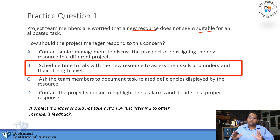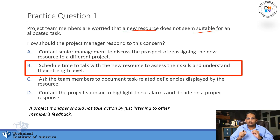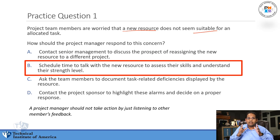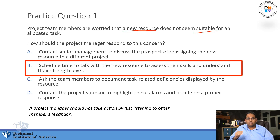Let's go through why the rest of them are wrong and why B is correct. For choice A, contacting senior management to discuss reassigning — there are two things wrong here. First, you should never take actions unless you have assessed the situation and found the root cause of your problem. That is a key mindset for this exam. Always, in any problem, assess first and find the root cause.